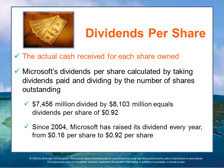Dividends per share are paid by the corporation to shareholders for each share owned. The payment is made from after-tax earnings, but it is taxable income to the stockholders, so dividends result in double taxation. Since 2004, Microsoft has raised its dividend every year from $0.16 per share to $0.92 per share. Microsoft's dividend paid of $7.5 billion divided by the 8.1 billion actual shares outstanding equals a dividend of $0.92 per share.